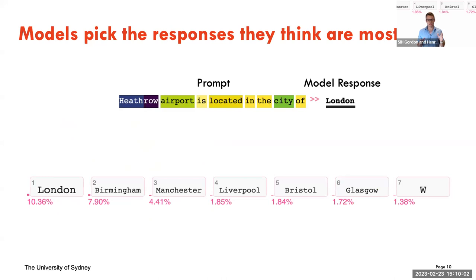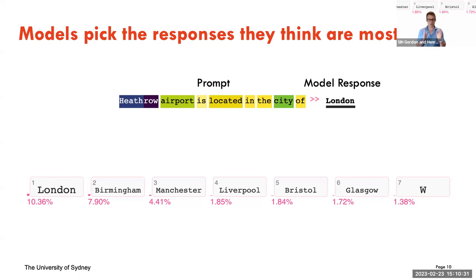It's important to think about this because this is the core mechanism for how all these models work and are able to get responses that are really impressive. Here's an example from the GPT architecture: the prompt is 'Heathrow airport is located in the city of blank,' and the model's response is 'London' — the most statistically likely response. The colors of the words in this slide show what the model is paying attention to when deciding what to fill in.